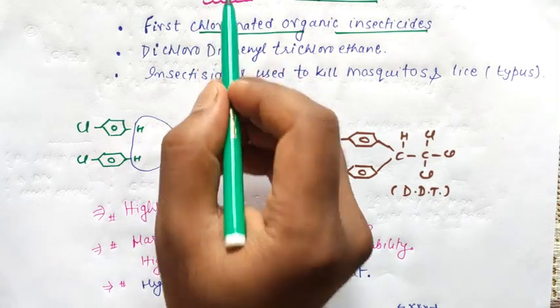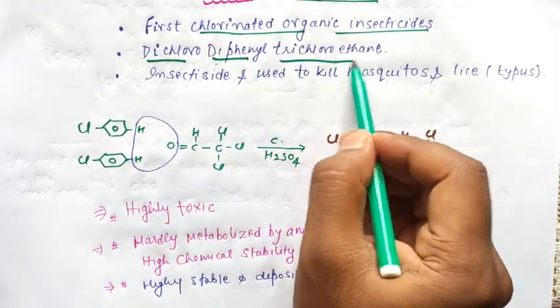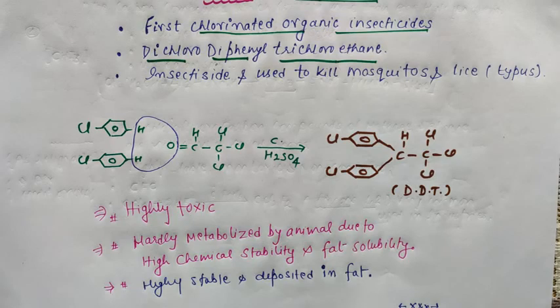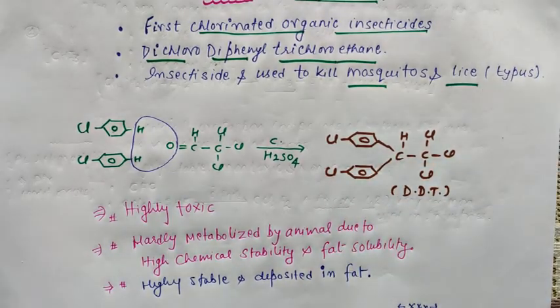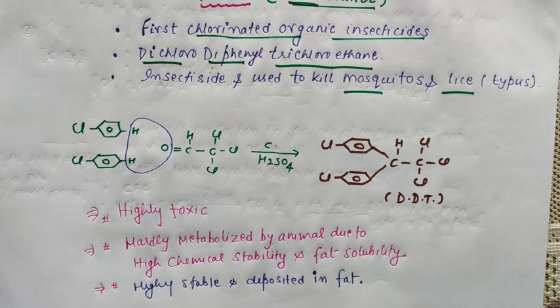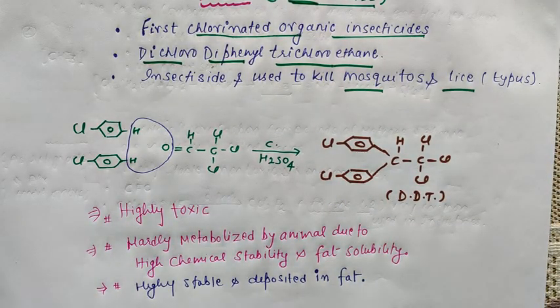D is dichloro, D is diphenyl, T is trichloroethane. This is an insecticide which is used to kill mosquitoes and lice. Mosquitoes cause malaria and lice cause typhus. The insecticide is extremely powerful but it can have harmful effects.